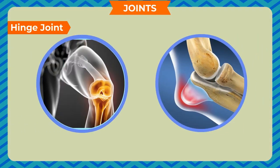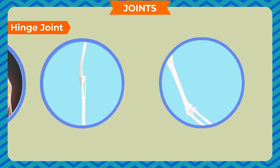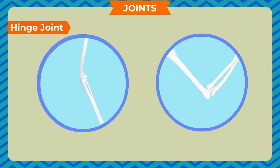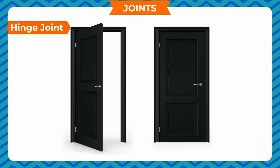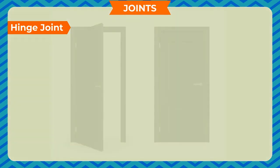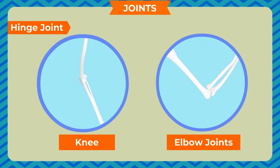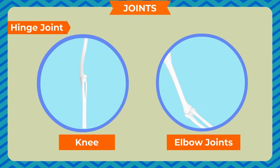Hinge joint: The end of one bone fits into the corresponding depression in the other bone. The movement of such joints is similar to the swinging of a door on its hinge, and they are therefore called hinge joints. Location: knee and elbow joints.